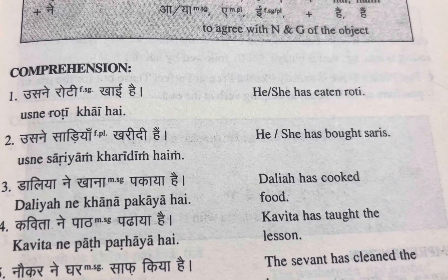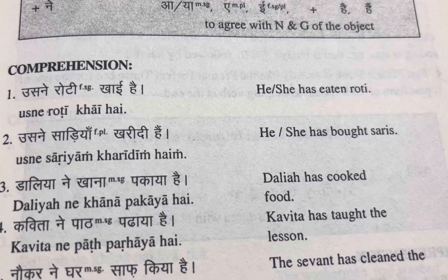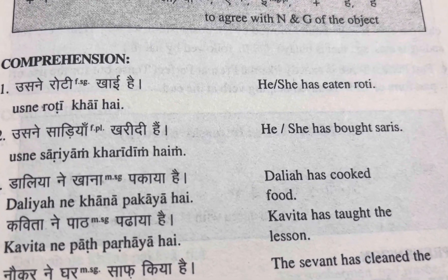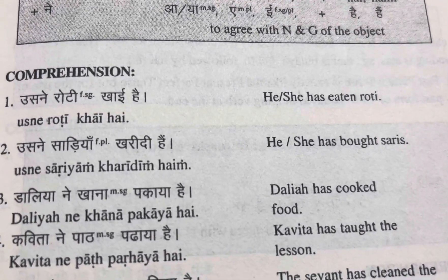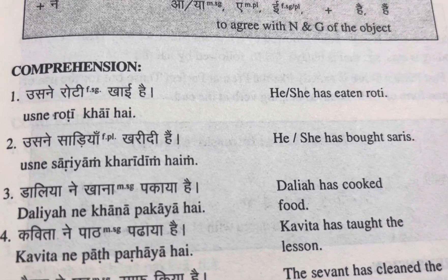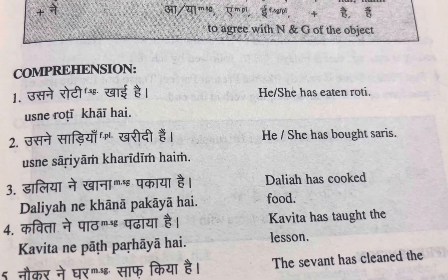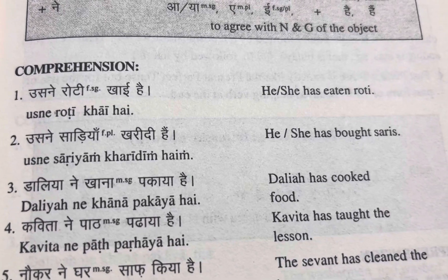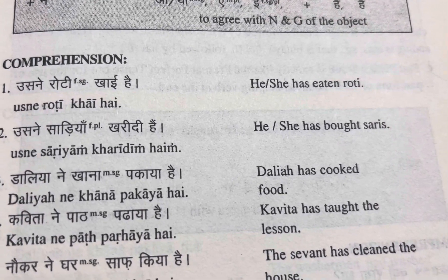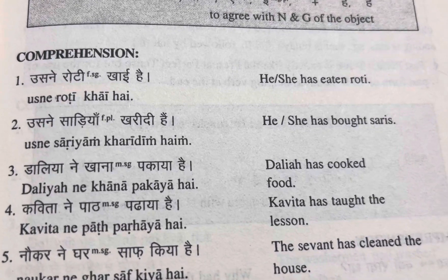Dalia has cooked food. Dalia ne khana pakaya hai. Khana is masculine singular, that's why we are saying pakaya hai. If we were saying something that has been cooked and it was feminine, we would have said pakai hai.